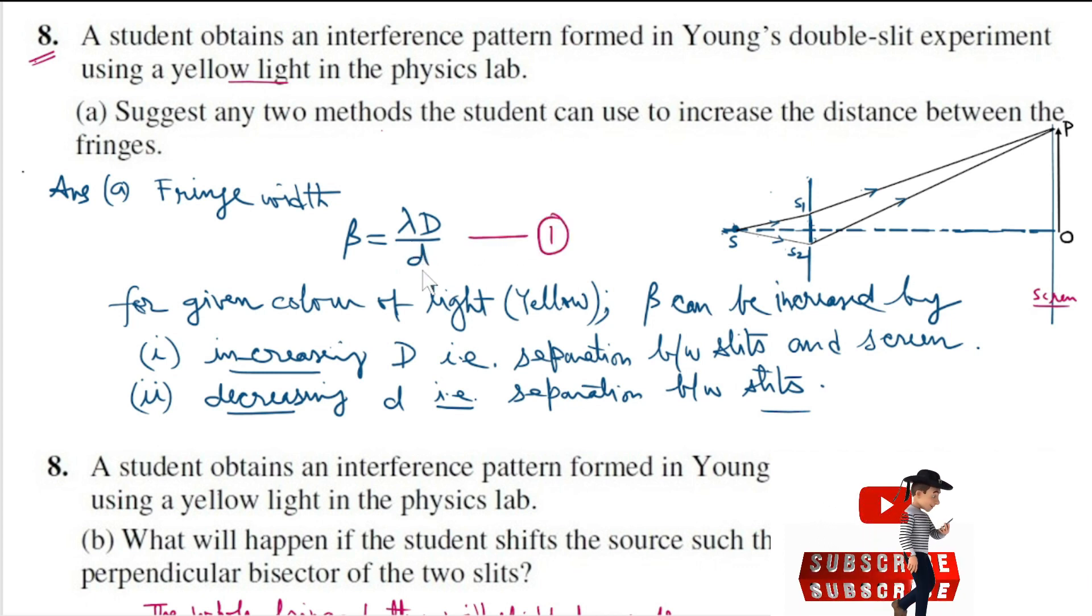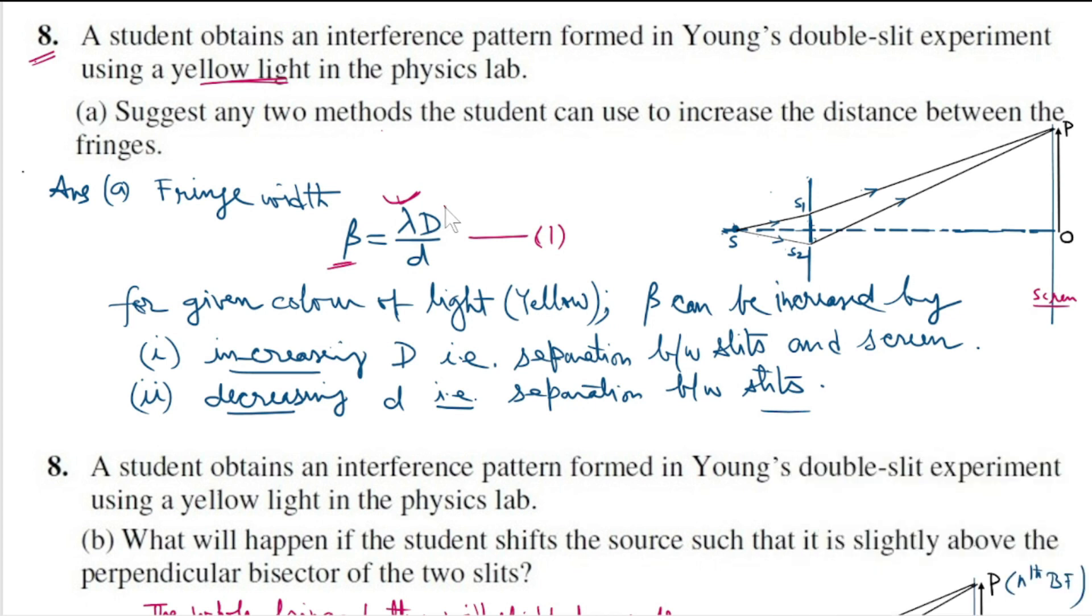All the symbols have their usual meaning. As yellow light is used, the value of λ is fixed. Now the value of β could be increased by increasing capital D and by decreasing small d.